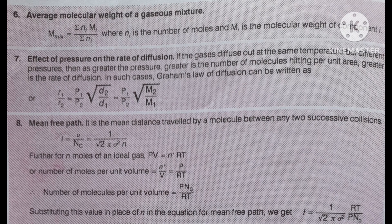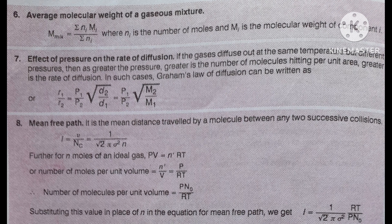For heating effect, μ is negative. When there is neither heating nor cooling, μ = 0. The temperature at which μ = 0 is called the inversion temperature. Below the inversion temperature, a gas shows cooling effect; above it, the gas shows heating effect.